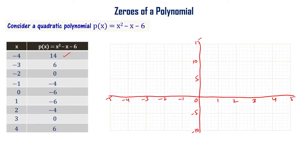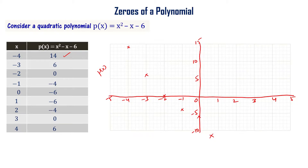Plotting the points: x = minus 4 gives p(x) = 14; x = minus 3 gives 6; x = minus 2 gives 0; x = minus 1 gives minus 4; x = 0 gives minus 6; x = 1 gives minus 6; x = 2 gives minus 4; x = 3 gives 0; x = 4 gives 6.